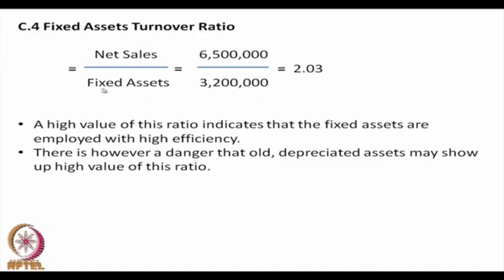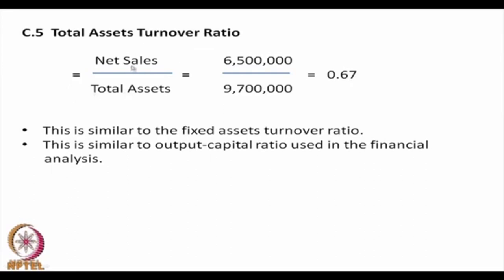Fixed assets turnover ratio is net sales divided by fixed assets, and in this case it is 2.03. A high value indicates that fixed assets are employed with high efficiency. However, old depreciated assets may show artificially high values because their book value is low. Total assets turnover ratio is net sales divided by total assets, similar to the output-capital ratio used by economists; in this case it is approximately 0.67.